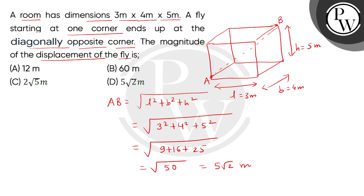This equals 5 square root of 2 meters. So the diagonal distance AB travelled by the fly is 5√2 meters. The correct answer is option D. Thank you.